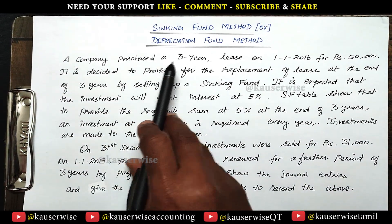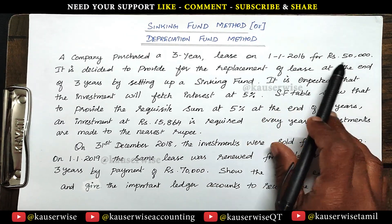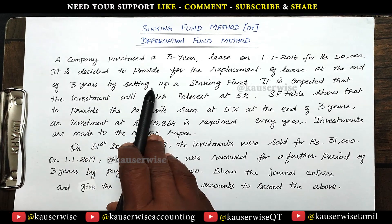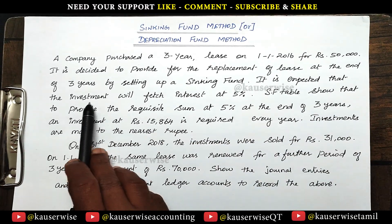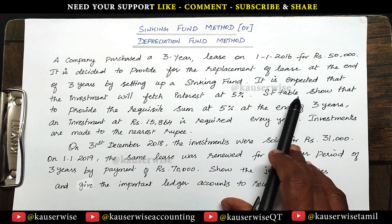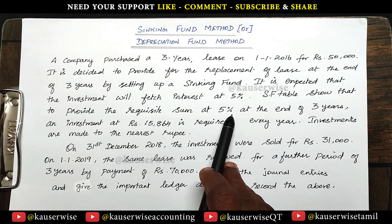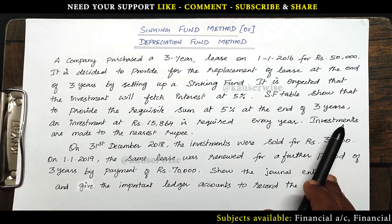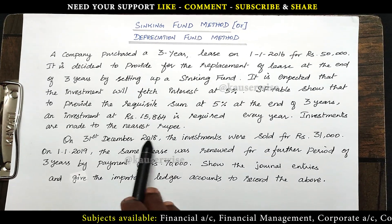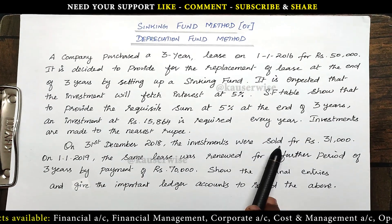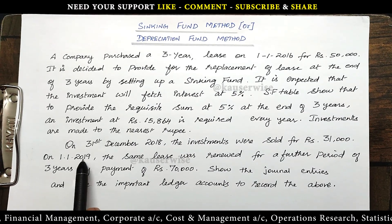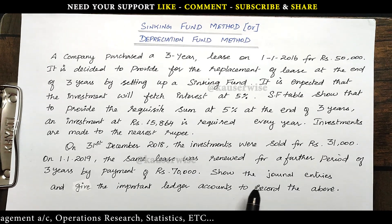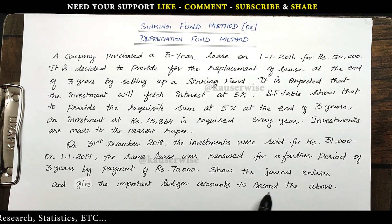A company purchased a 3-year lease on 1st January 2016 for Rs. 50,000. It is decided to provide for the replacement of the lease at the end of 3 years by setting up a sinking fund. It is expected that the investment will fetch interest at 5%. The sinking fund table shows that to provide the requisite sum at 5% at the end of 3 years, an investment of Rs. 15,864 is required every year. Investments are made to the nearest rupee.